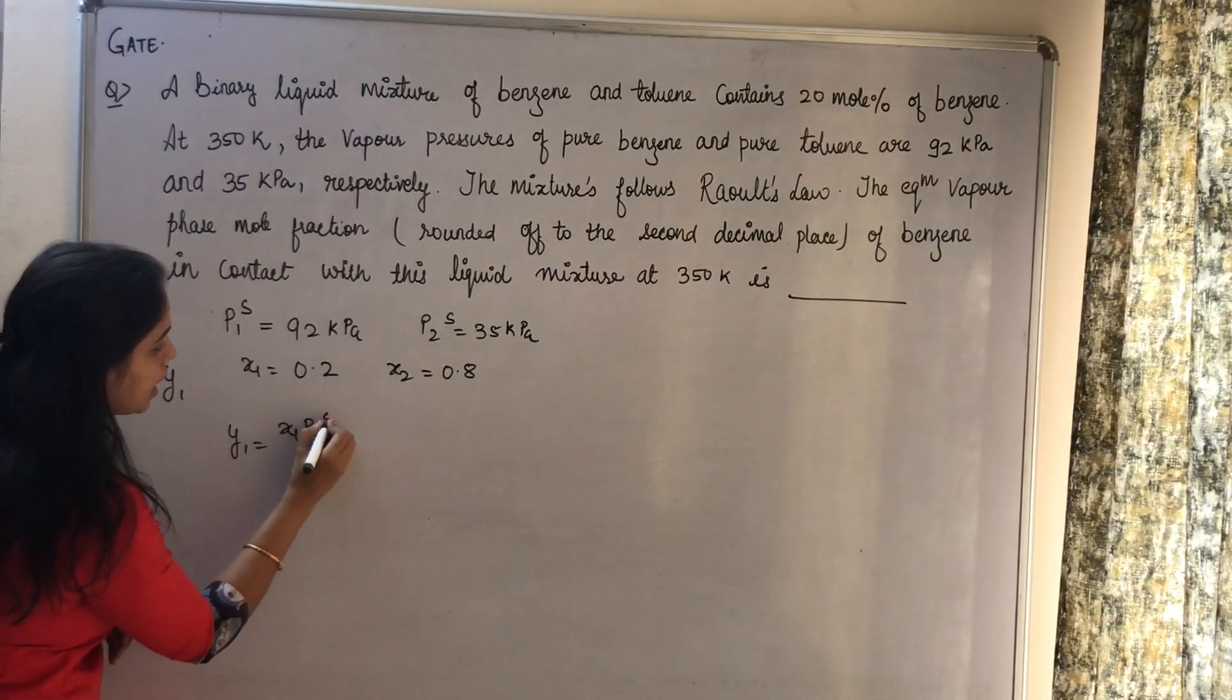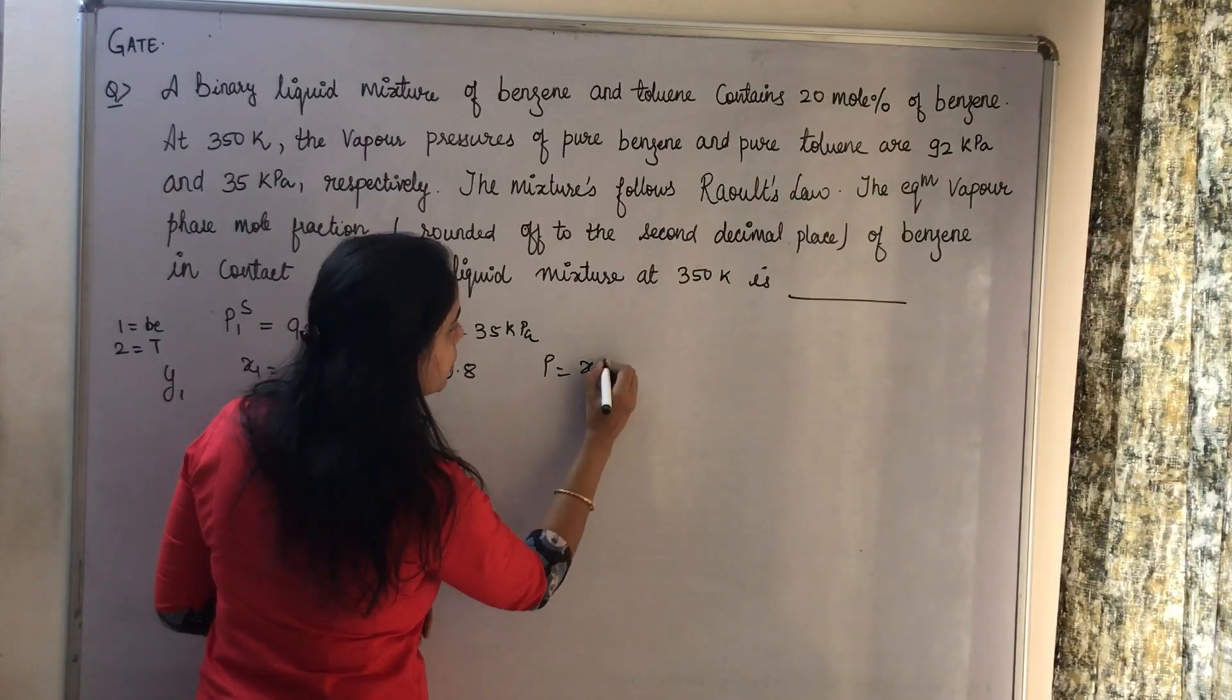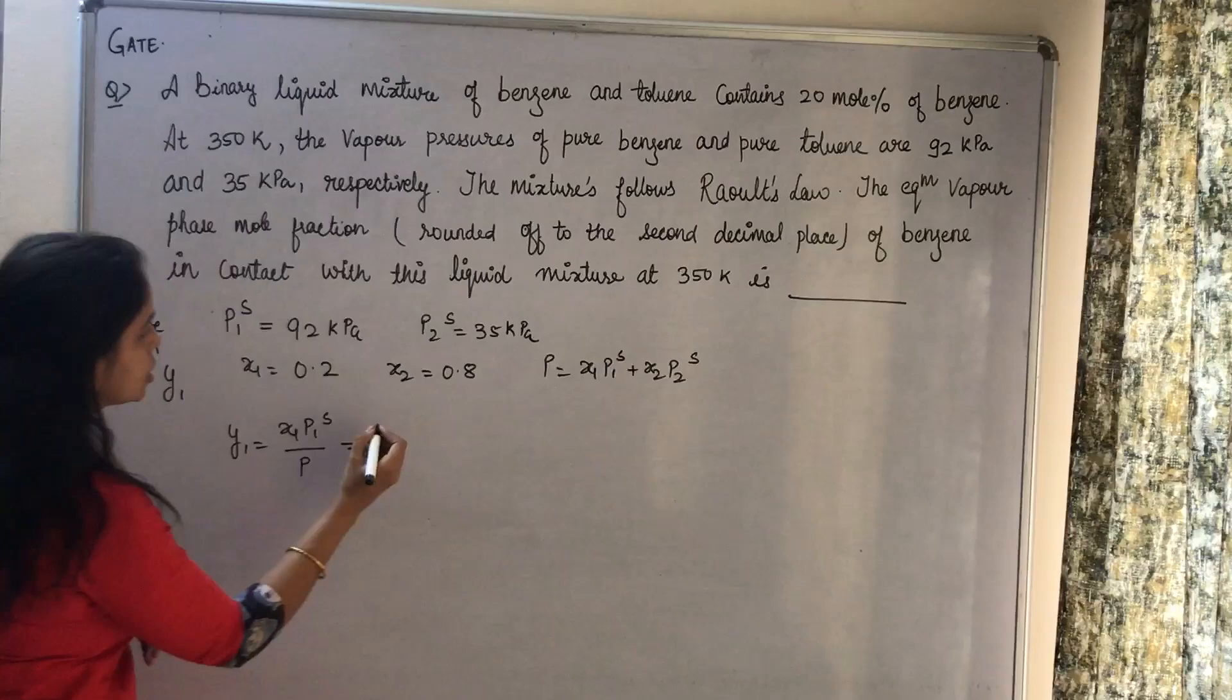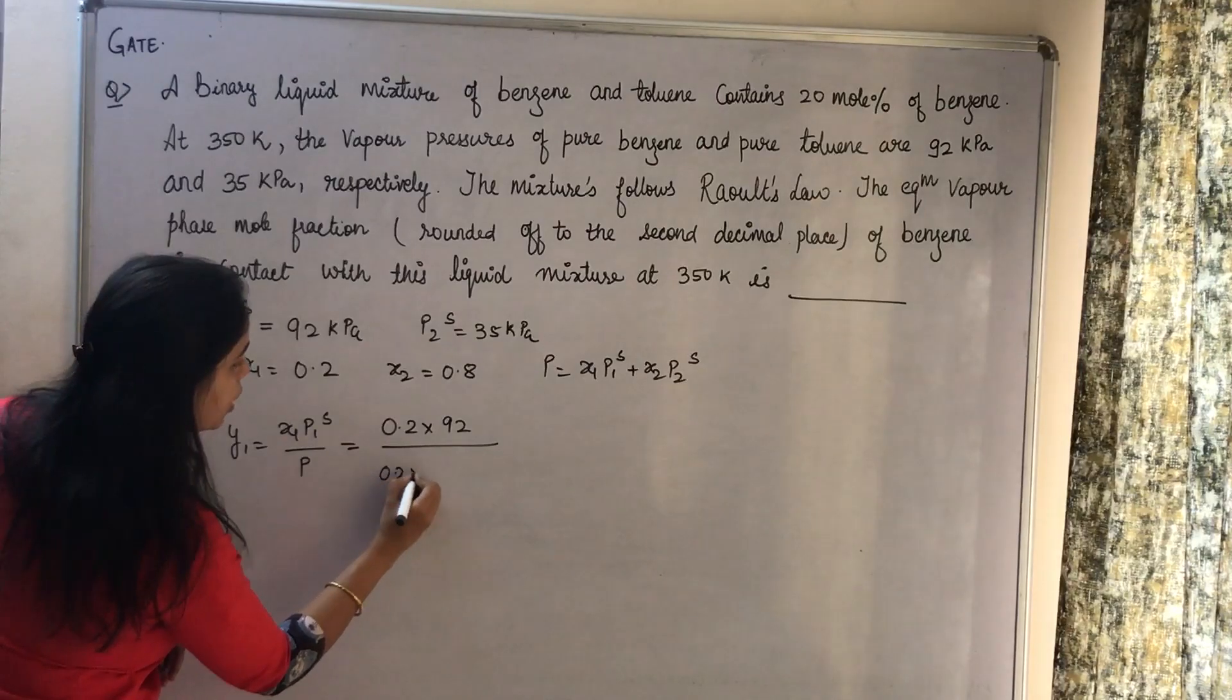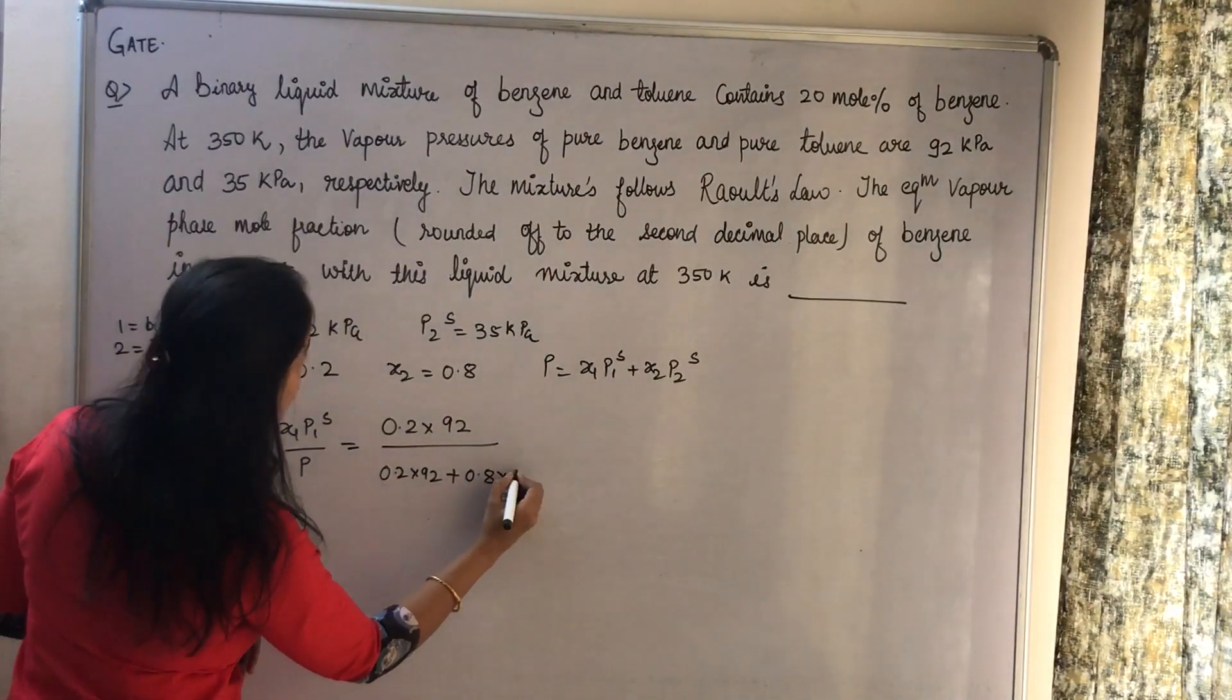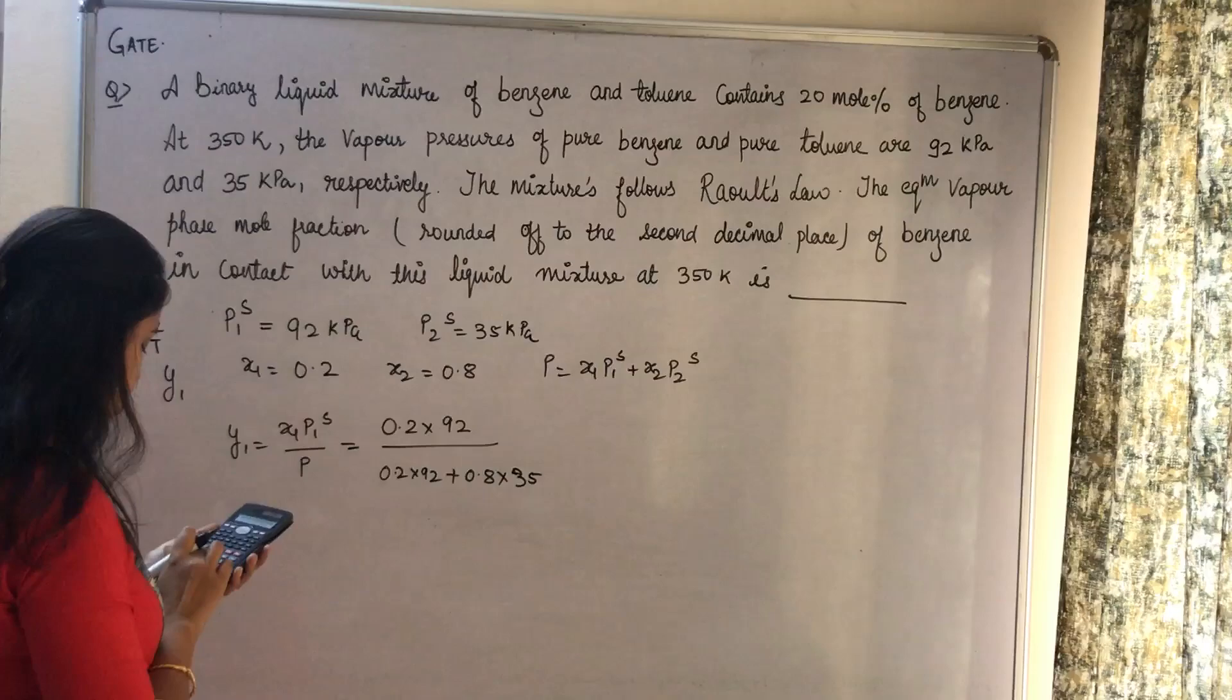Total pressure can be written as x1 times P1S plus x2 times P2S. Just substitute all the values: 0.2 times 92 upon (0.2 times 92 plus 0.8 times 35) kilopascal.